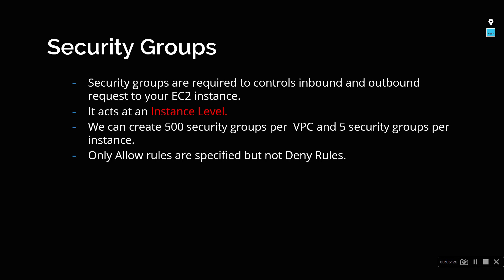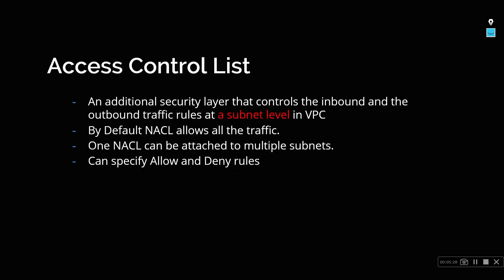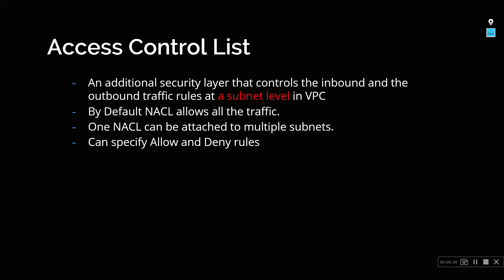NACL is an additional security layer created at the subnet level within your VPC. Each subnet will have a specific NACL. By default, NACL allows all traffic and does not deny or restrict anything — contrary to security groups, which by default restrict everything. This is the main difference between NACL and security groups.